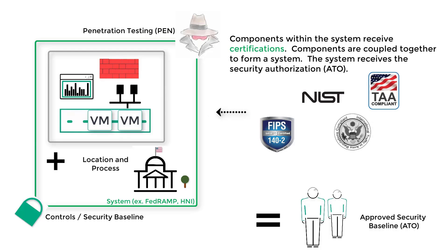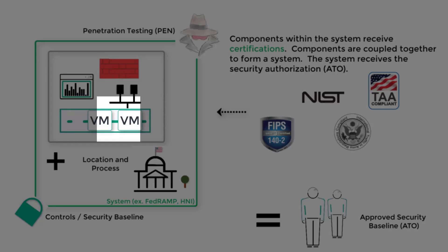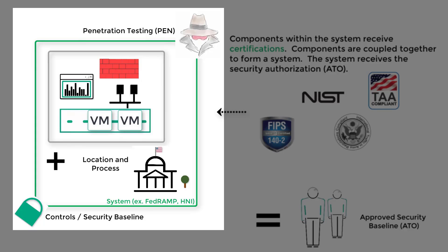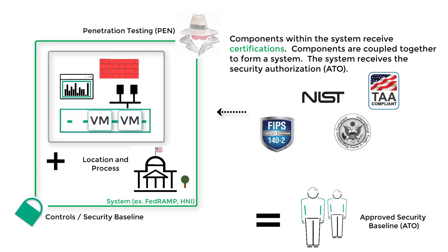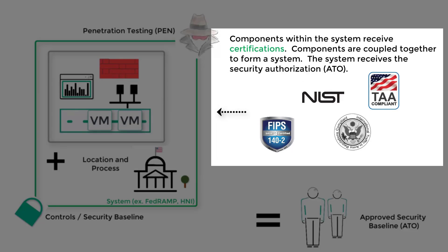Certifications are typically on components that are within the system. The system, represented on the left-hand side of the screen, is the ultimate objective of putting components — server, storage, network — together to provide an IT service, like email or file sharing. These certifications, such as FIPS or TAA compliant, may apply to a component or multiple components within that system.